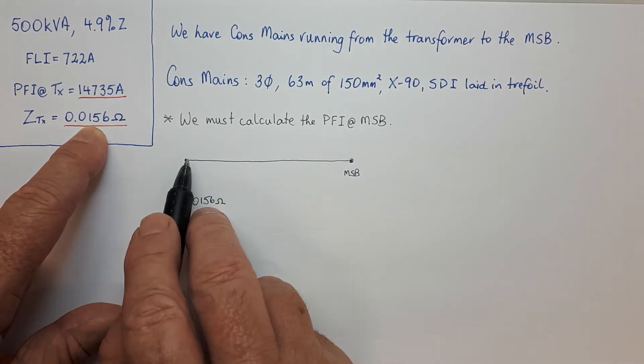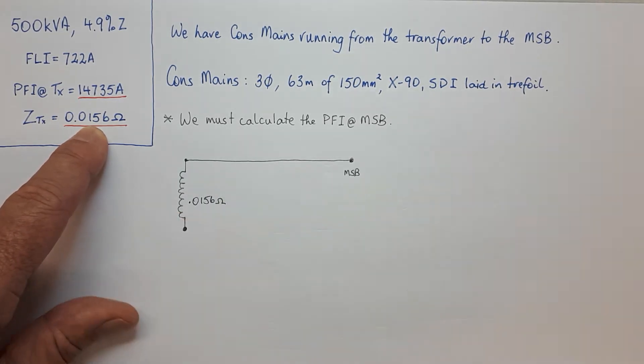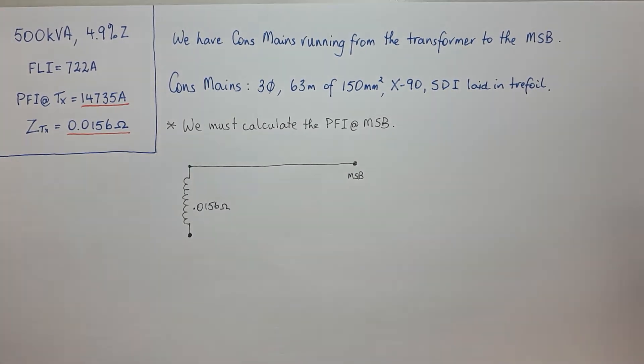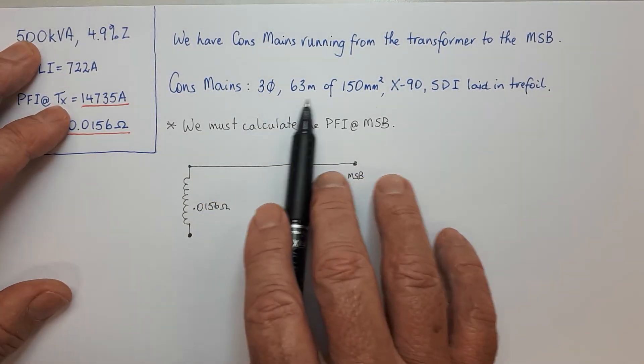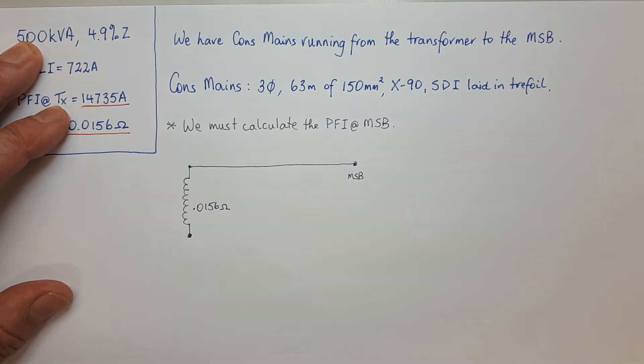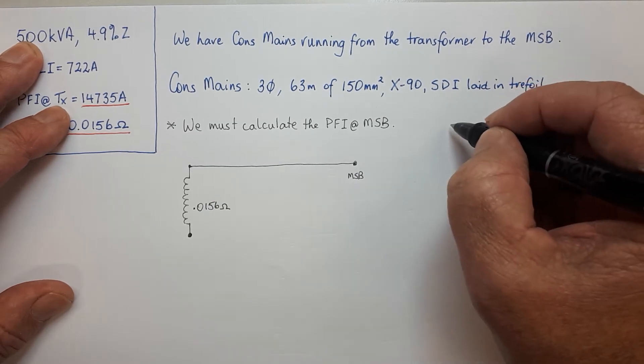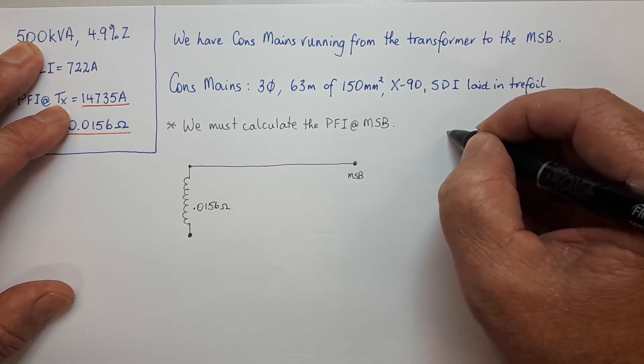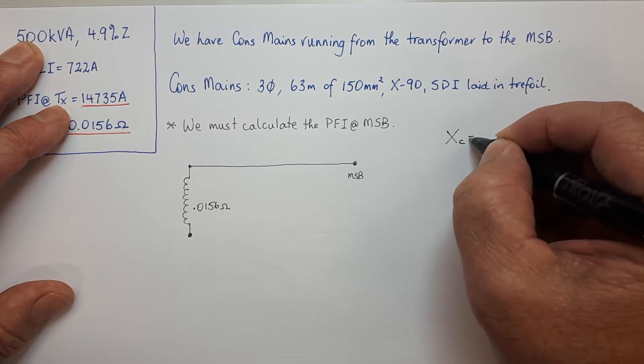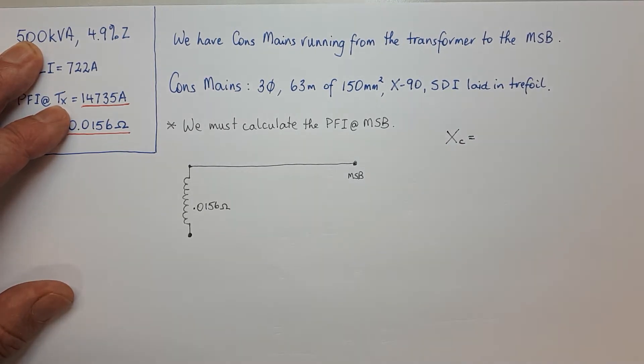Now we need to find the impedance of this cable. I can tell you that for 150mm² X-90 SDI laid in trefoil, the cable reactance XC - I'll teach you next year how to find all of this stuff from AS 3008.